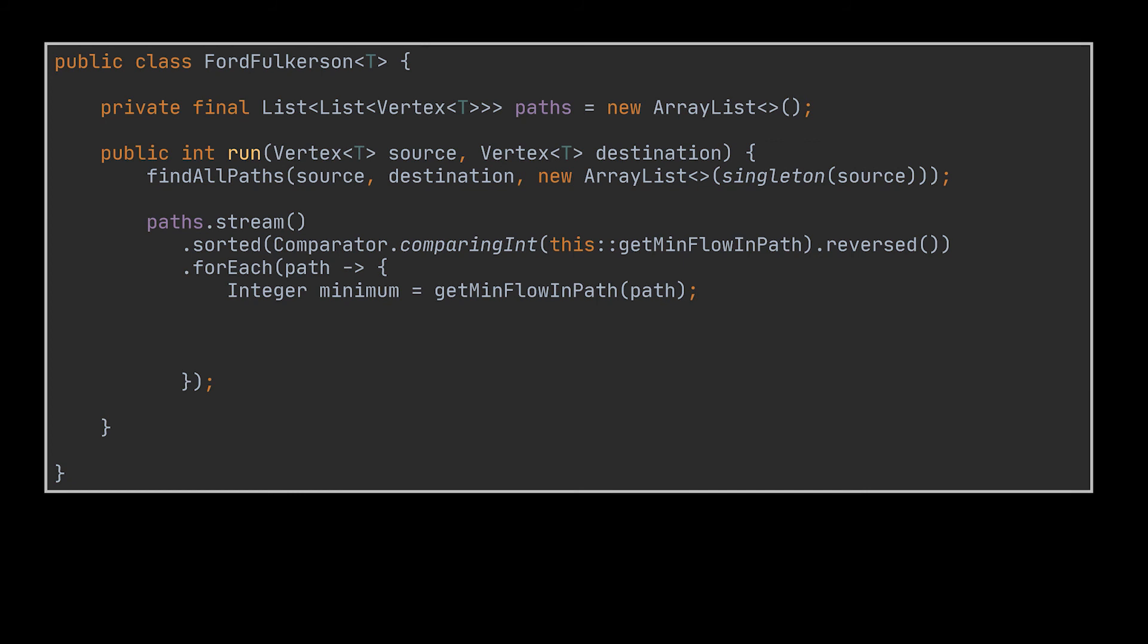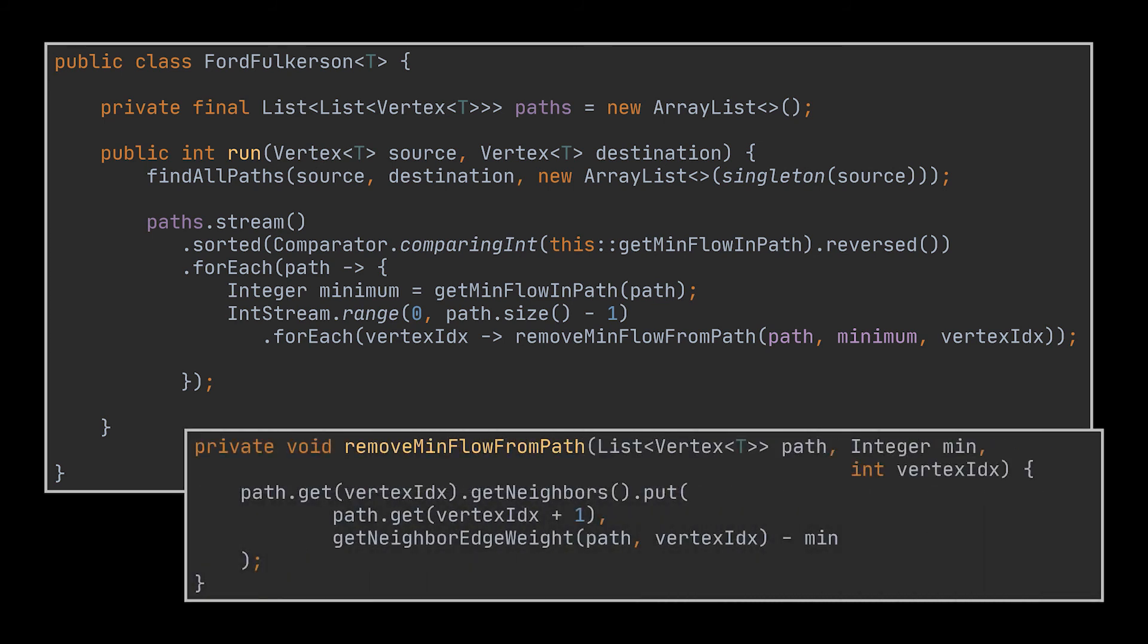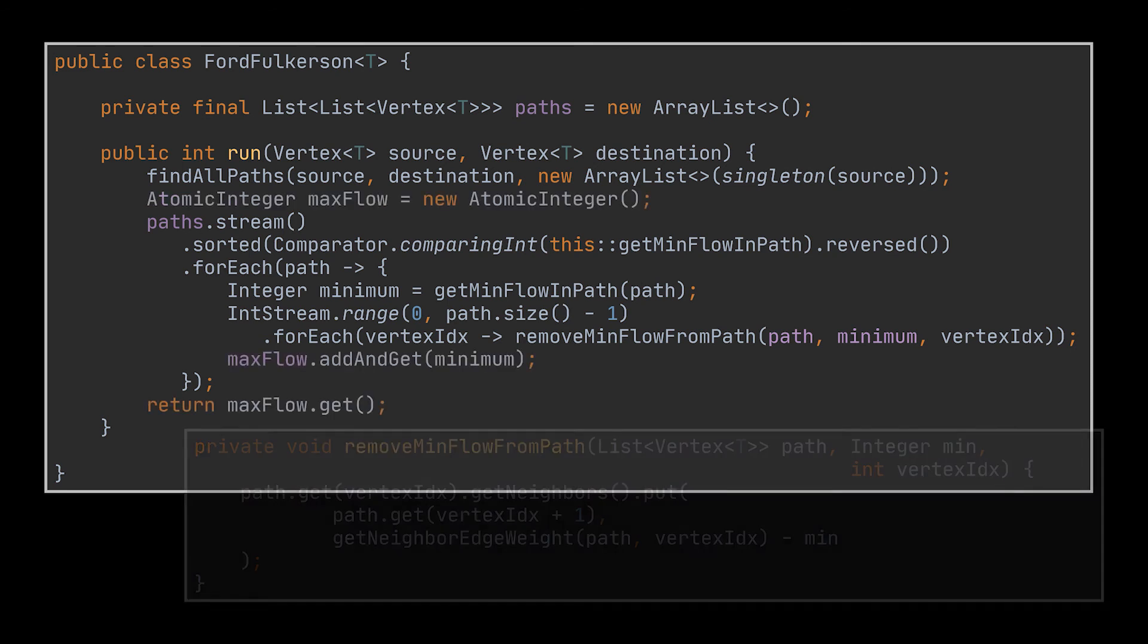Okay, after sorting our paths, what we need to do is traverse them in order and for each one fetch the minimum flow that can be traversed inside this path. This minimum should be subtracted from all the weights of the vertices appearing in this path and should be added to our max flow variable. Because we are using a map, to update the value of our keys stored inside it, we simply re-put the same vertex we had, however this was done on a value subtracted by the minimum specific to the current path.